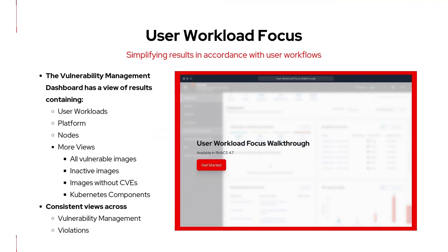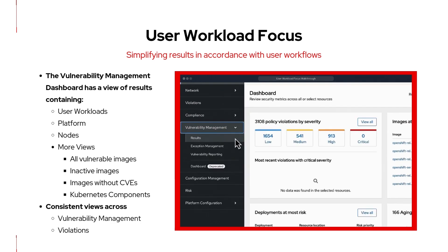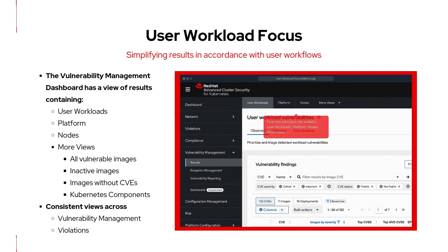ACS 4.7 brings a significant change in the vulnerability management and violations dashboard. 4.7 aims to help bridge the gap between user-facing software and platform-specific software. This includes vulnerability breakdowns such as user workloads and platform nodes, as well as more views that include vulnerable images, inactive images, images without a vulnerability, and Kubernetes components.